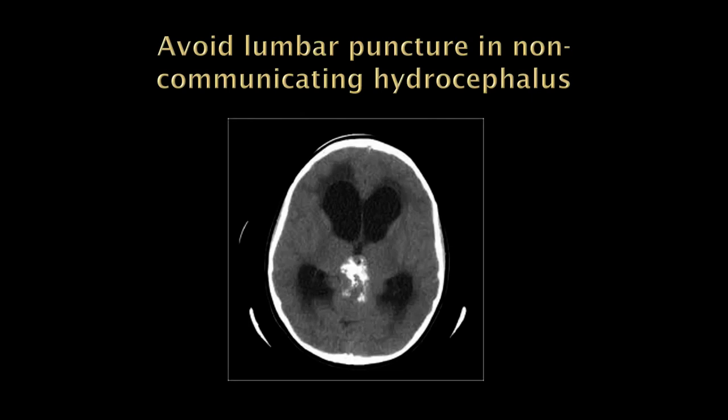Today we're going to get into the neurologic examination, but let's finish up talking about CSF and meninges. I mentioned there are three different types of hydrocephalus. Two of them are a true hydrocephalus, and the other is kind of a pseudo — not truly a hydrocephalus.